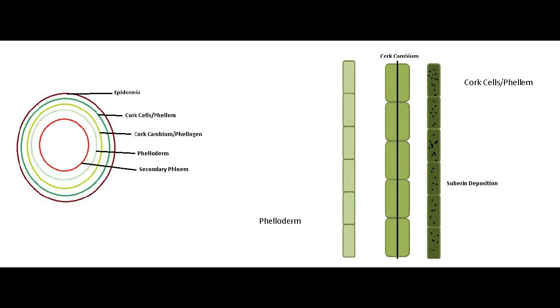After a particular time, suberin deposition occurs. Now if you see on your left, you have new layers added. Dark green one is cork cells or phellem, and on the inside we have cork cambium and further inside we have phelloderm and secondary phloem, then vascular cambium and then secondary xylem. The only thing to notice in this diagram is suberin deposition. I've made it evident with the help of dots. This should not be misleading because apart from suberin, lignin, cellulose, hemicellulose, and polyphenols also exist in this part.